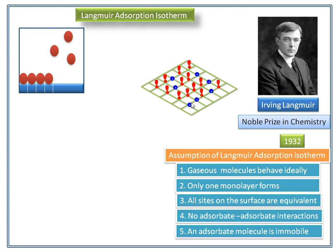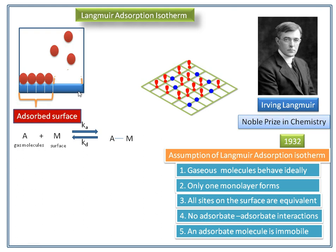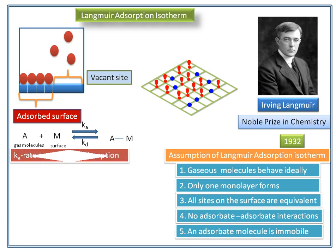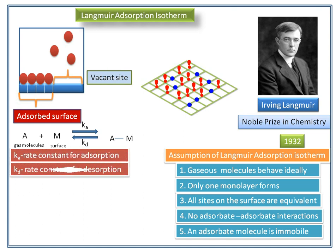We further assume a dynamic equilibrium between the adsorbed molecules and the free molecules. Here, A is a gas molecule and M is the surface site. The forward reaction is: A + M → AM (adsorption), and the backward reaction is: AM → A + M (desorption). Ka is the rate constant for adsorption, and Kd is the rate constant for desorption.